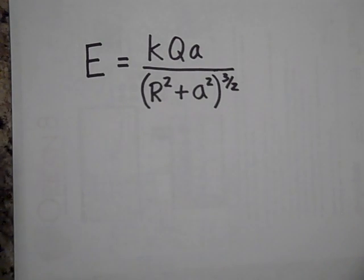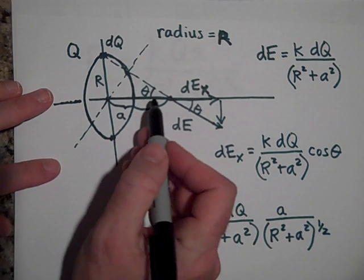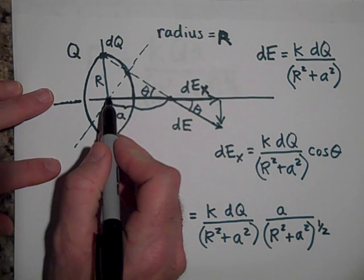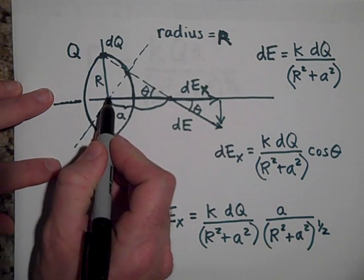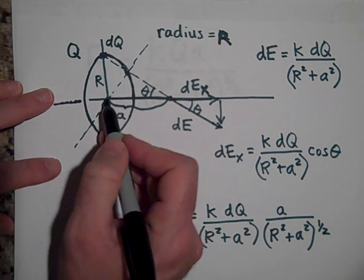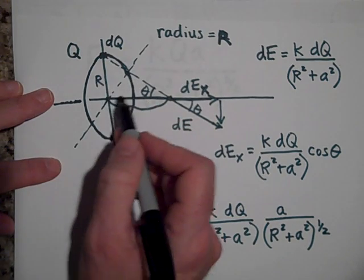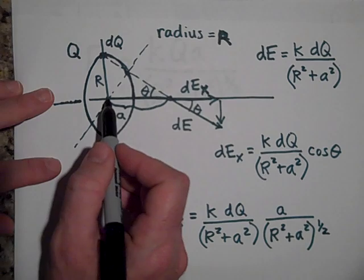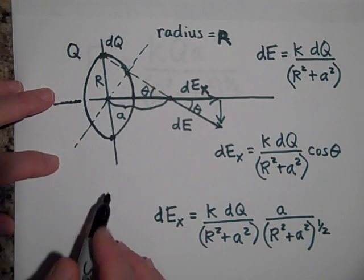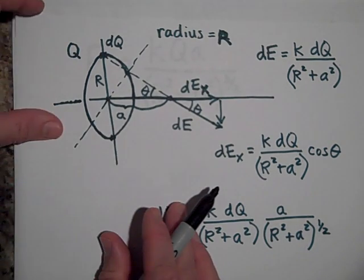Okay, I would also like to point out, though, that if you're at the center, the electric field right here at a equals zero is... if I put a positive test charge right there, it'd be pushed the same amount by all the little different dq's. And so it would totally cancel there. There is no electric field at the center.